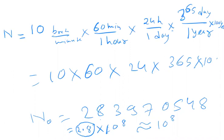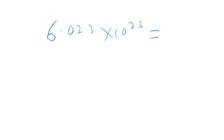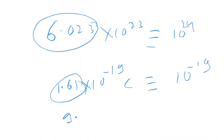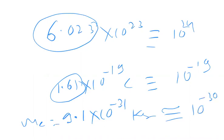The order of magnitude is 10^8. Now, if the leading number is greater than 5, we round up: for example, 6.023 × 10^23 — Avogadro's number — has order of magnitude 10^24. For 1.61 × 10^−19 coulombs, order of magnitude is 10^−19. For electron mass 9.1 × 10^−31 kg, since 9.1 > 5, the order of magnitude becomes 10^−30.